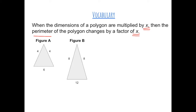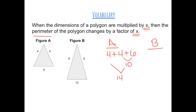For example, the perimeter of figure A would be 4 plus 4 plus 6. 6 plus 4 gives us 10, and 10 plus another 4 gives us 14. The perimeter of figure B would be 8 plus 8 plus 12. 12 plus 8 gives us 20, and 20 plus 8 more gives us 28.